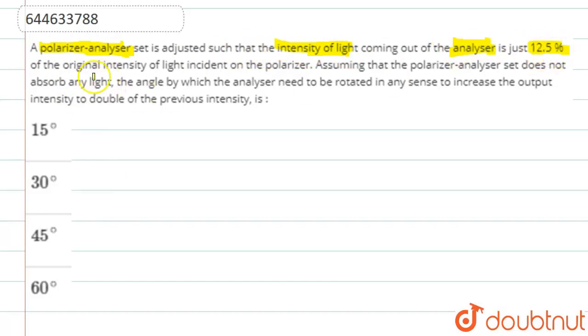The light is incident on the polarizer. Assuming that the polarizer-analyzer set does not absorb any light, meaning they are ideal, the angle by which the analyzer needs to be rotated in any sense to increase the output intensity to double of the previous intensity is what we need to find.